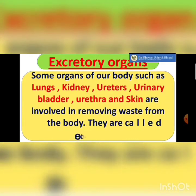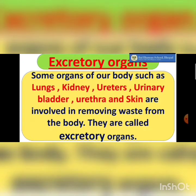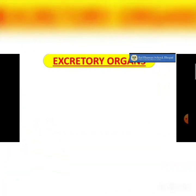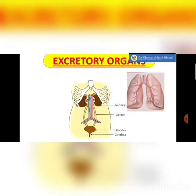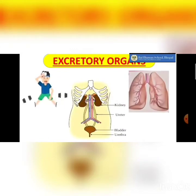When we talk about excretory organs, these are the organs involved in removing waste from our body. Organs like lungs, kidneys, ureters, urinary bladder, urethra, and skin are some of the excretory organs. The main excretory organs include the kidneys, ureter, bladder, and urethra — which form the urinary system — along with lungs and skin, which also help in removing waste.